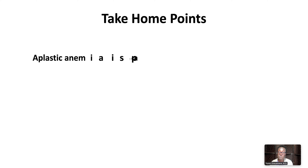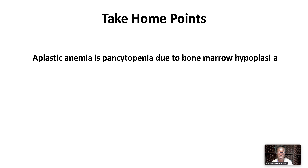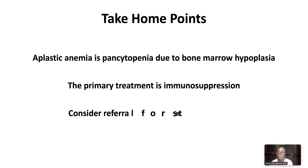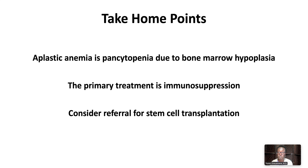Aplastic anemia is really pancytopenia due to bone marrow hypoplasia. The primary treatment for aplastic anemia is immunosuppression. In appropriate patients, consider referral for stem cell transplantation.